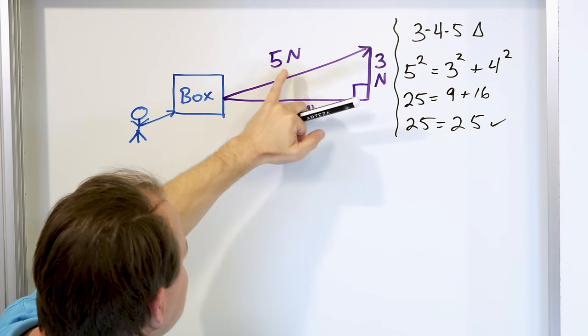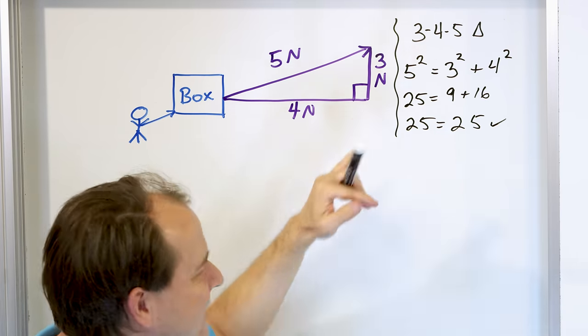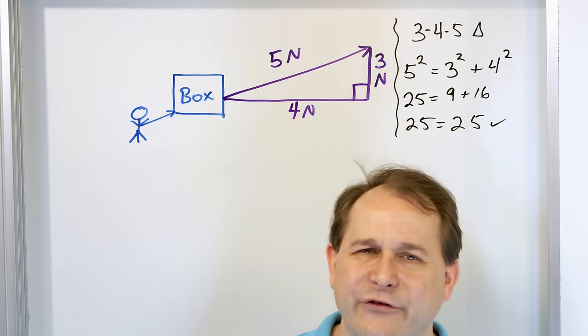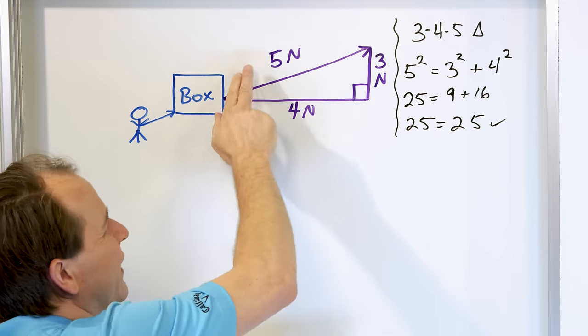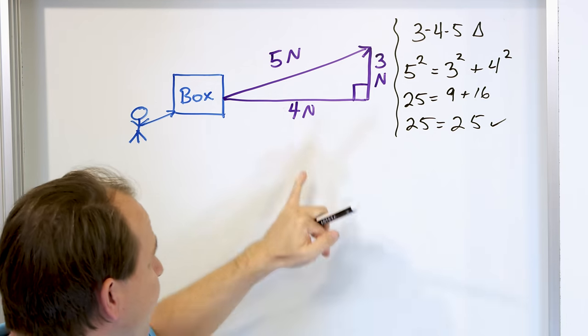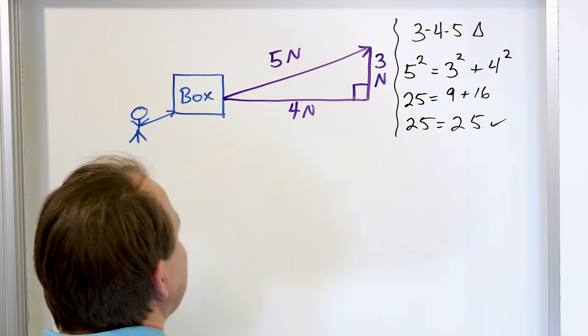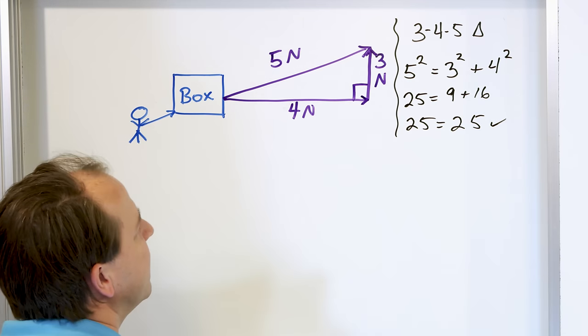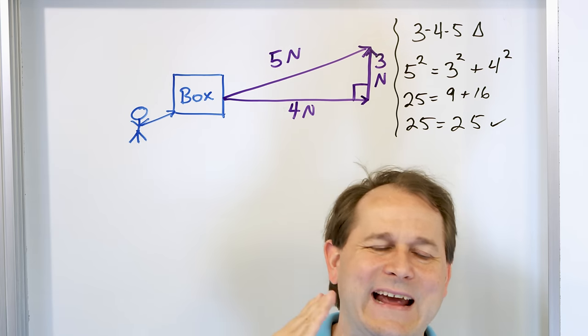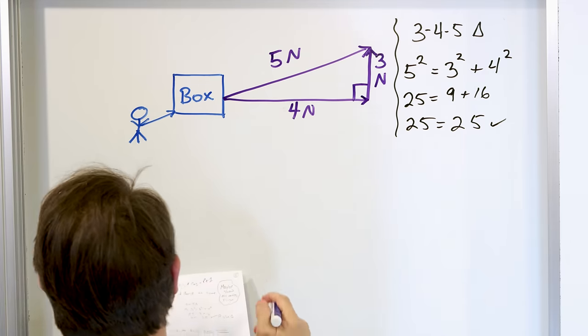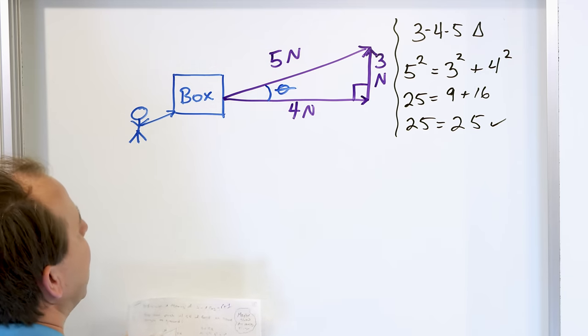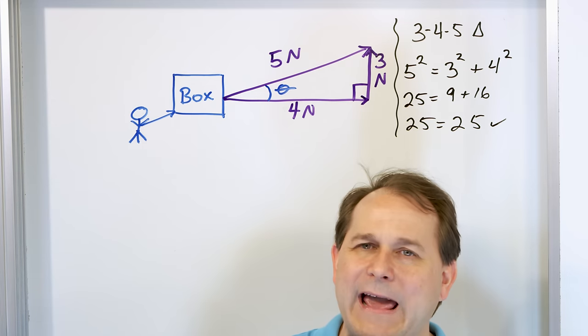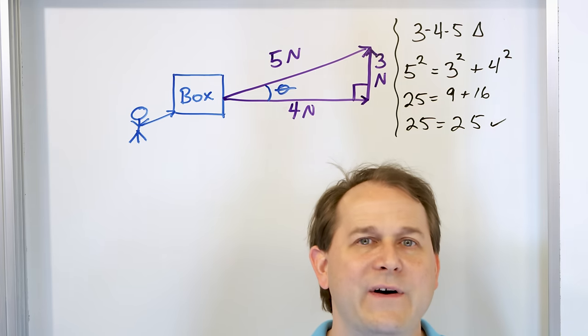Since I know this is a right triangle and the hypotenuse is 5 Newtons — that's why I chose 5 Newtons — I automatically know from geometry the other two sides. So four Newtons of the force is directed horizontally and three Newtons is directed straight up. The 5-Newton force acting at some angle has been broken up into what we call components: the horizontal part is 4 Newtons and the vertical part is 3 Newtons.